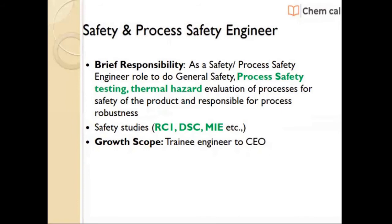Process Safety Engineer: As a process safety engineer, the role involves thermal hazard evaluation of the process, such as reaction hazard categorization based on process temperature, maximum time of synthesis of reaction, boiling point and decomposition temperature, chemical and material compatibility, heat of reaction, runaway scenario, dosing rate of the limiting reagent, and safe operable conditions. This includes handling instruments like reaction calorimetry (RC1), differential scanning calorimetry, and adiabatic calorimetry like ARC and ARSST, and using the data for evaluating the thermal hazard of the process.